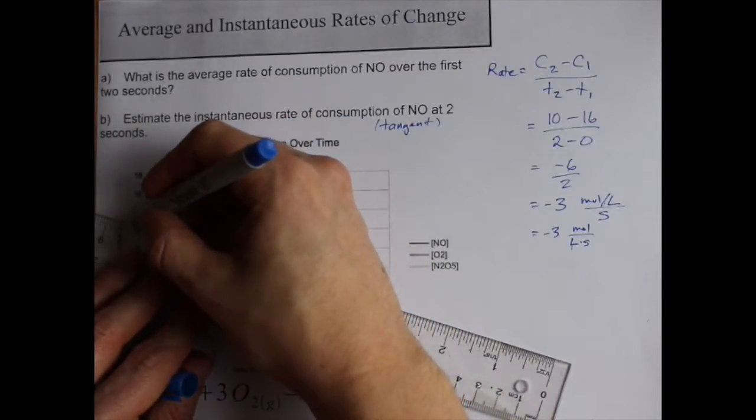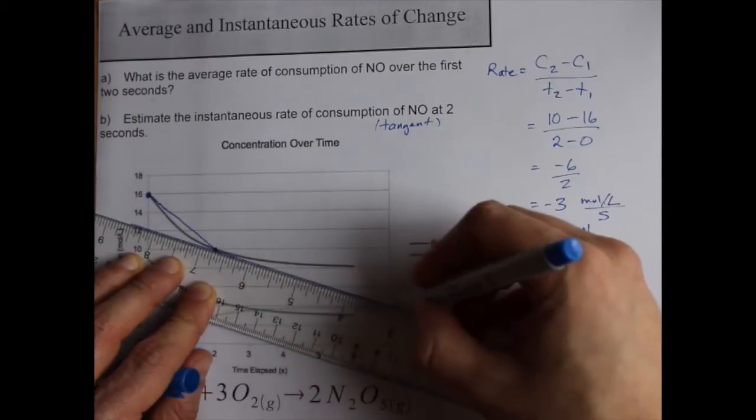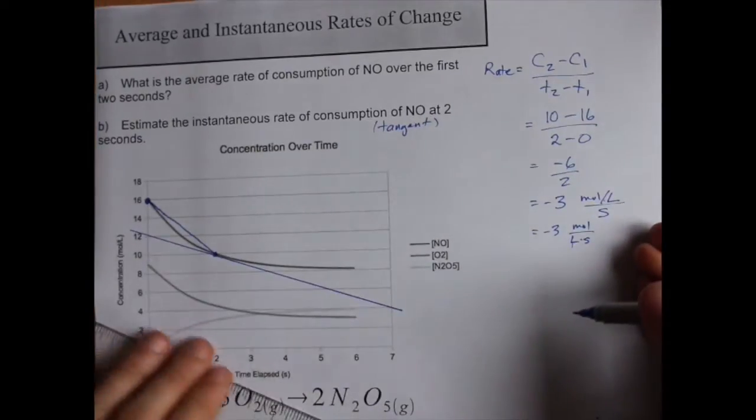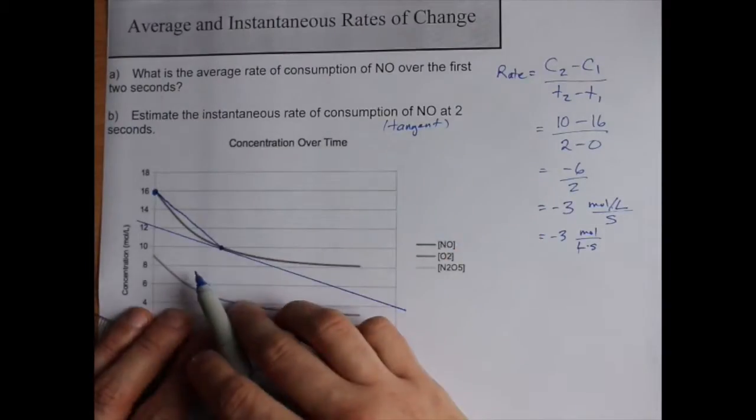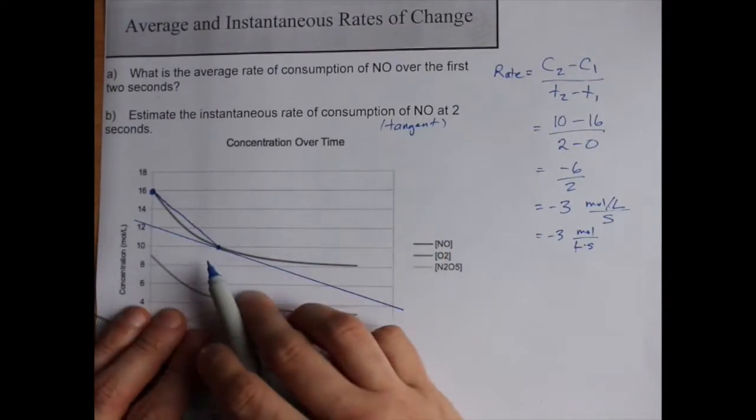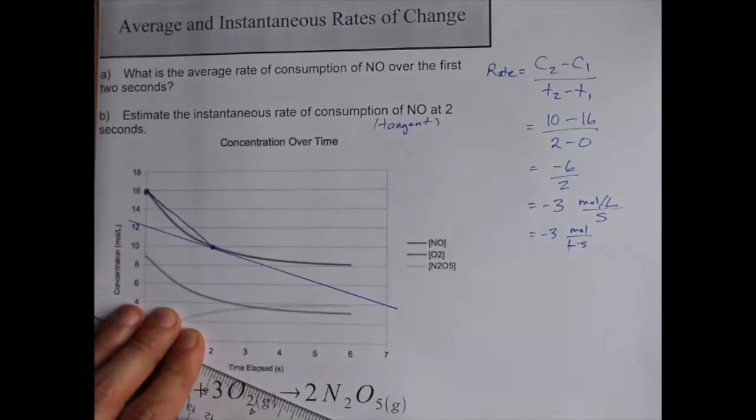Now you can't solve for the slope of a tangent with an equation unless you know calculus. But here we're just going to draw a line, a tangent line, that barely grazes the curve at two seconds. Because that's when I was asked for the instantaneous rate of consumption.